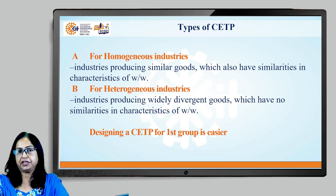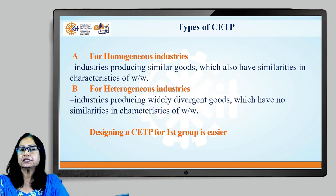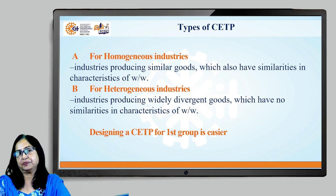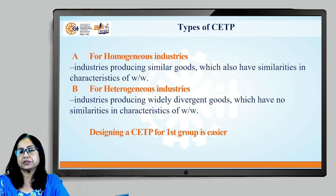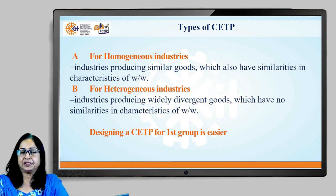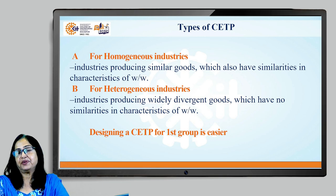There are two types of CETP. The first is for homogeneous industries — these are industries which produce similar goods and have similarities in the characteristics of their wastewater. The second category is heterogeneous industries — these produce widely divergent goods and there are no similarities in the characteristics of wastewater produced. Obviously, the task of designing a CETP for the first group is easy, whereas for heterogeneous industries it becomes a little complicated.